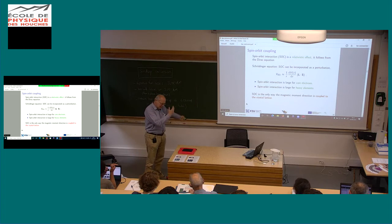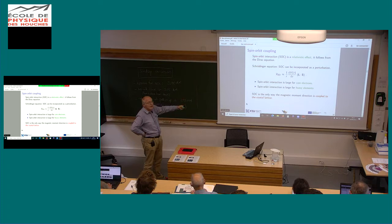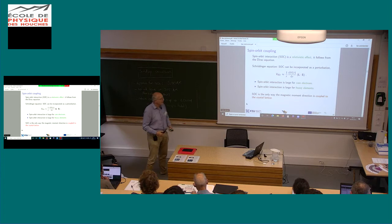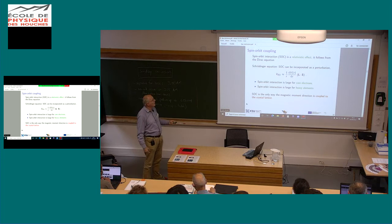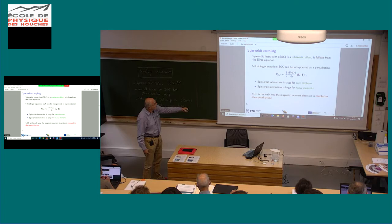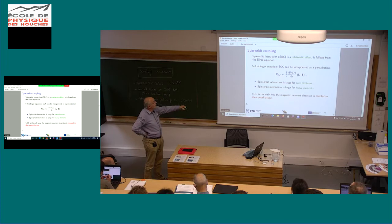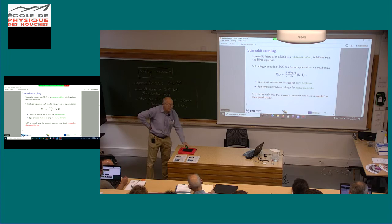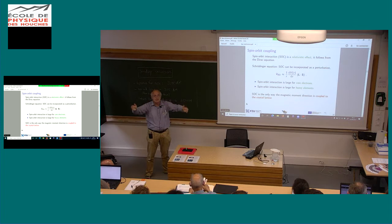XMCD and the orbital magnetic moment are both dependent on spin-orbit interaction, which is a relativistic effect following from the Dirac equation. You can also insert it into the Schrödinger equation as a perturbation; the proper expression contains both orbital and spin — it is spin-orbit coupling or spin-orbit interaction. Looking at this expression, you can see the gradient of potential, so spin-orbit interaction would be large for core electrons. For instance, the difference between the L₂ and L₃ edges in iron is because of spin-orbit interaction. It's also large for heavy elements.